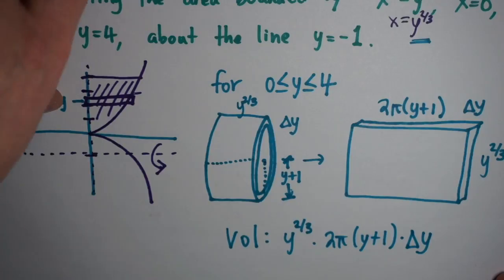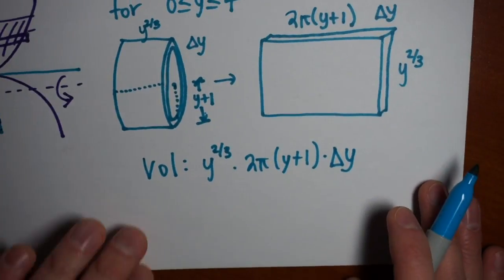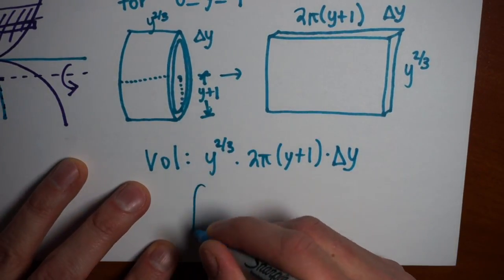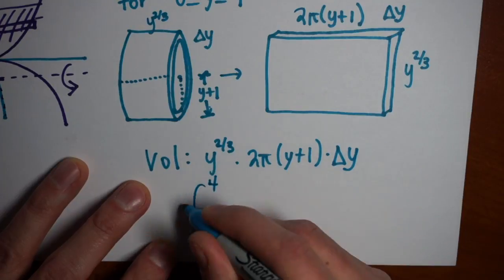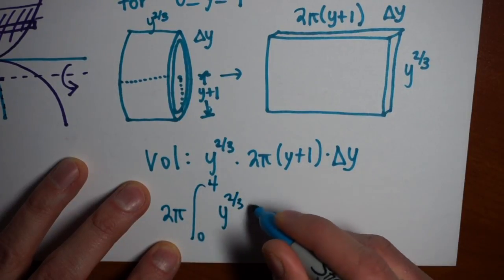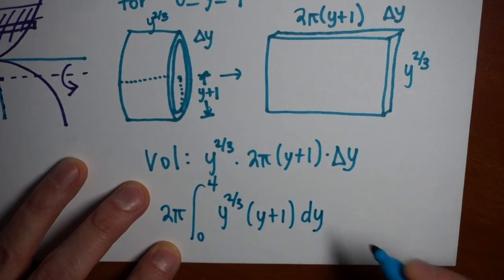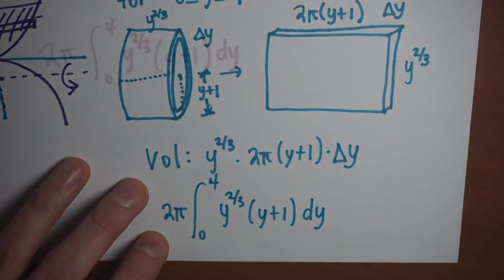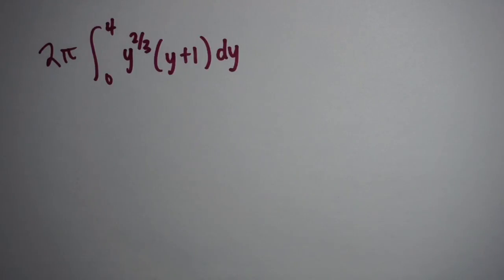If I take all of these and add them together, then take a limit, what I end up with is the integral. The y values I was working with were 0 to 4. I'll pull the 2π out, and I end up with the integral from 0 to 4 of y^(2/3)(y + 1) dy. If I can find this integral, I can find the volume.